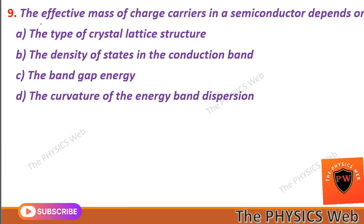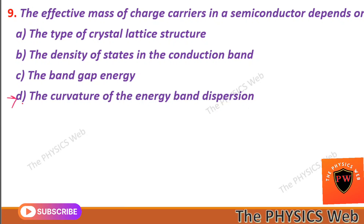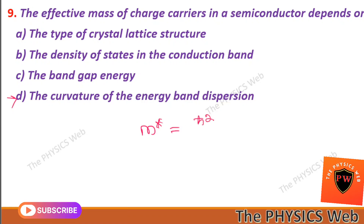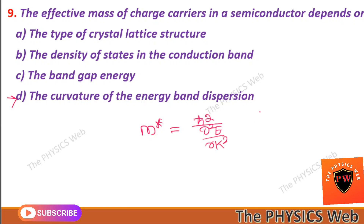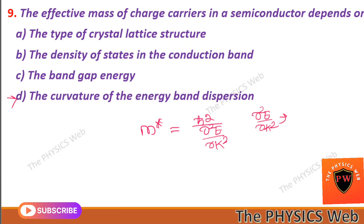Next, question nine: the effective mass of charge carriers in a semiconductor depends on the curvature of the energy band. So D is your correct option. The effective mass is mathematically expressed as ħ² divided by (d²E/dk²), and this d²E/dk² gives you the curvature of the energy band, so the effective mass is inversely proportional to the curvature of the band.